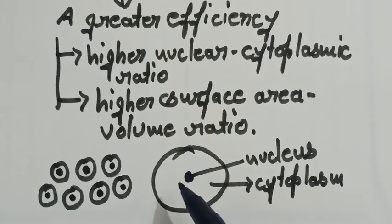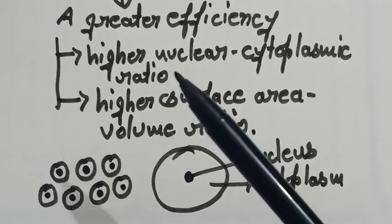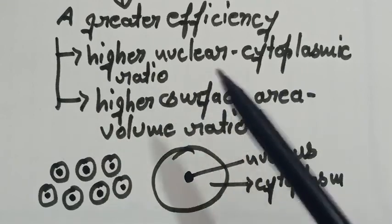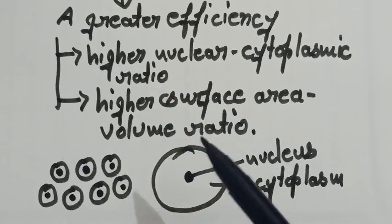So that is why smallness of cells have a greater efficiency because it allows higher nuclear cytoplasmic ratio as well as higher surface area volume ratio.